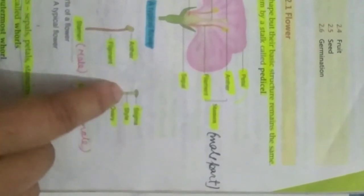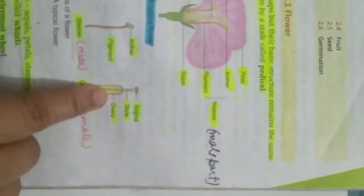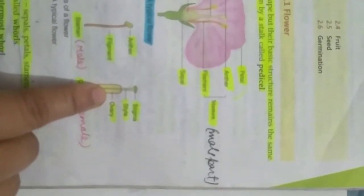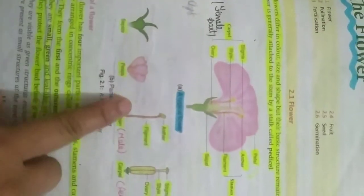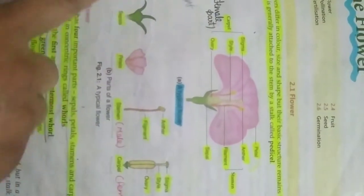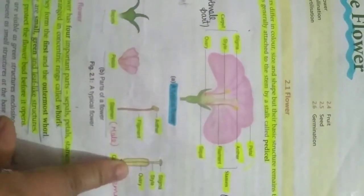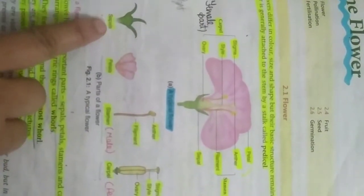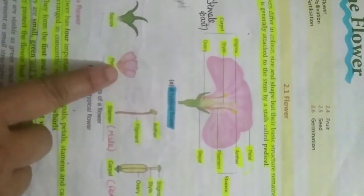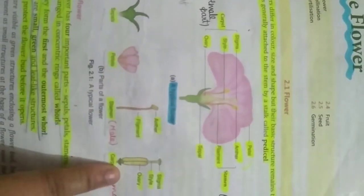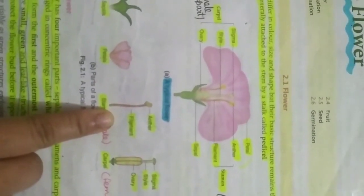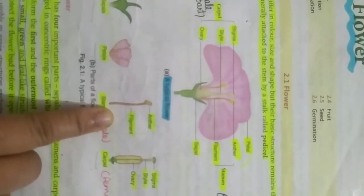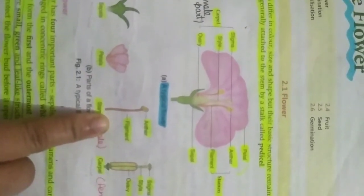The ovary is the swollen part and it consists of one or more ovules. So these are the four whorls of a flower, and mostly a complete flower has these four parts. Flowers are already distributed into two types: bisexual or unisexual.